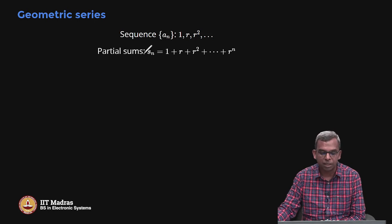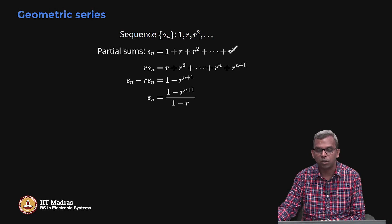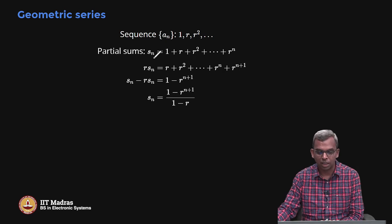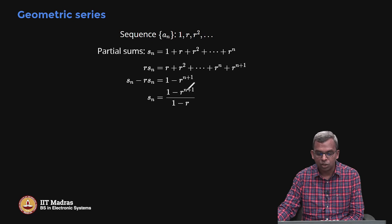It turns out there is a simpler expression for S_n. To derive it, you multiply S_n by r — this is a very standard method. You get r + r² + ... + r^(n+1). The trick is to subtract these two expressions. You get large-scale cancellation and are left with 1 − r^(n+1). So S_n = (1 − r^(n+1)) / (1 − r). All the dependence on n is captured in just one term.